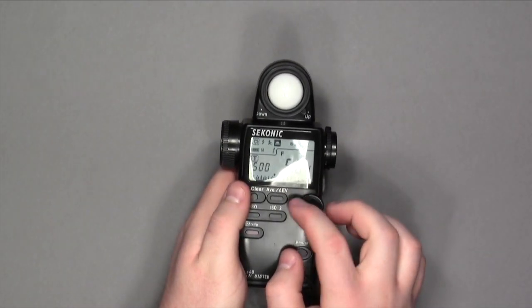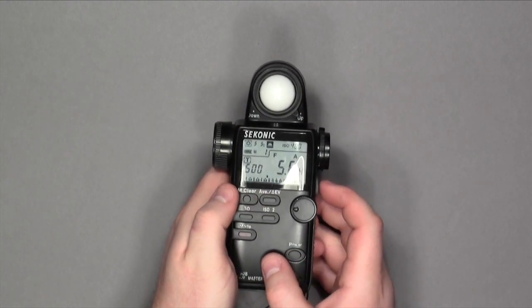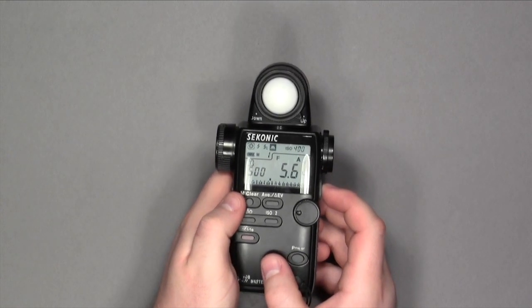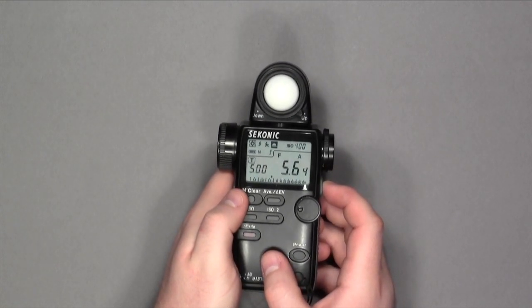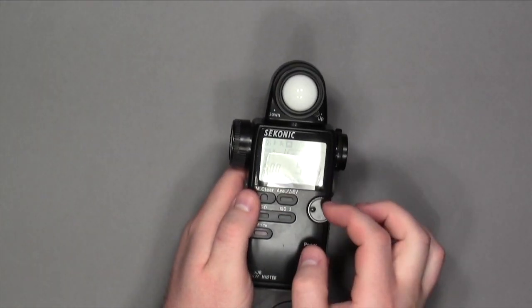This average button, when pressed, tells us if I take meter readings of a certain area and I want to get the average light reading for that area. If I take all different kinds of light readings, it's going to average all of them out.